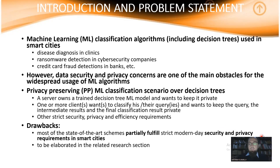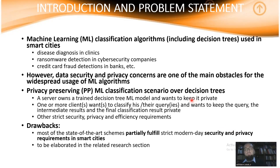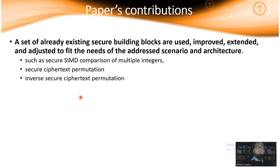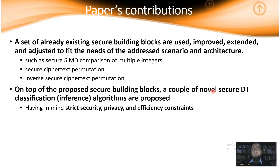To this end, there are several privacy-preserving, secure and private decision tree evaluation schemes proposed in the literature. However, most state-of-the-art ones only partially fulfill the strict security and privacy requirements in smart cities. The paper's contributions are the following: initially, a set of already existing secure building blocks are used, improved, extended, and adjusted to fit the needs of the addressed scenario and architecture. On top of the proposed secure building blocks, novel secure decision tree classification algorithms are proposed, designed with strict security, privacy, and efficiency constraints in mind.